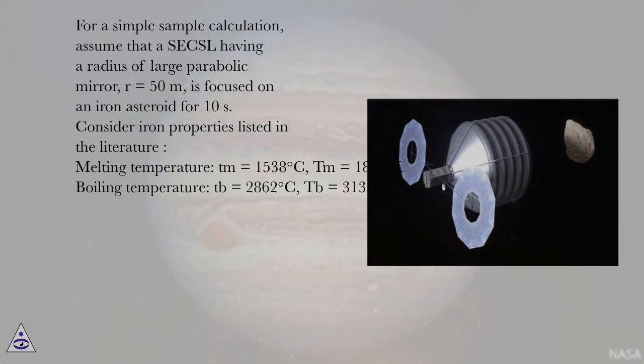For a simple sample calculation, assume that a SECSL having a radius of large parabolic mirror R = 50 meters is focused on an iron asteroid for 10 seconds. Consider iron properties listed in the literature.